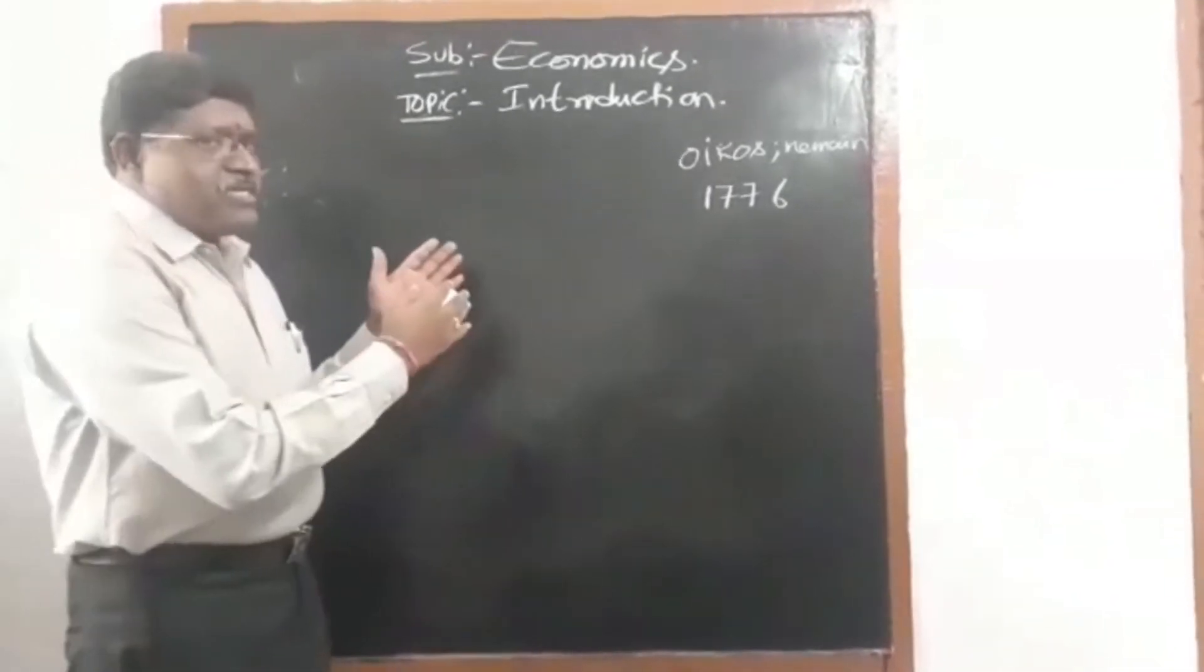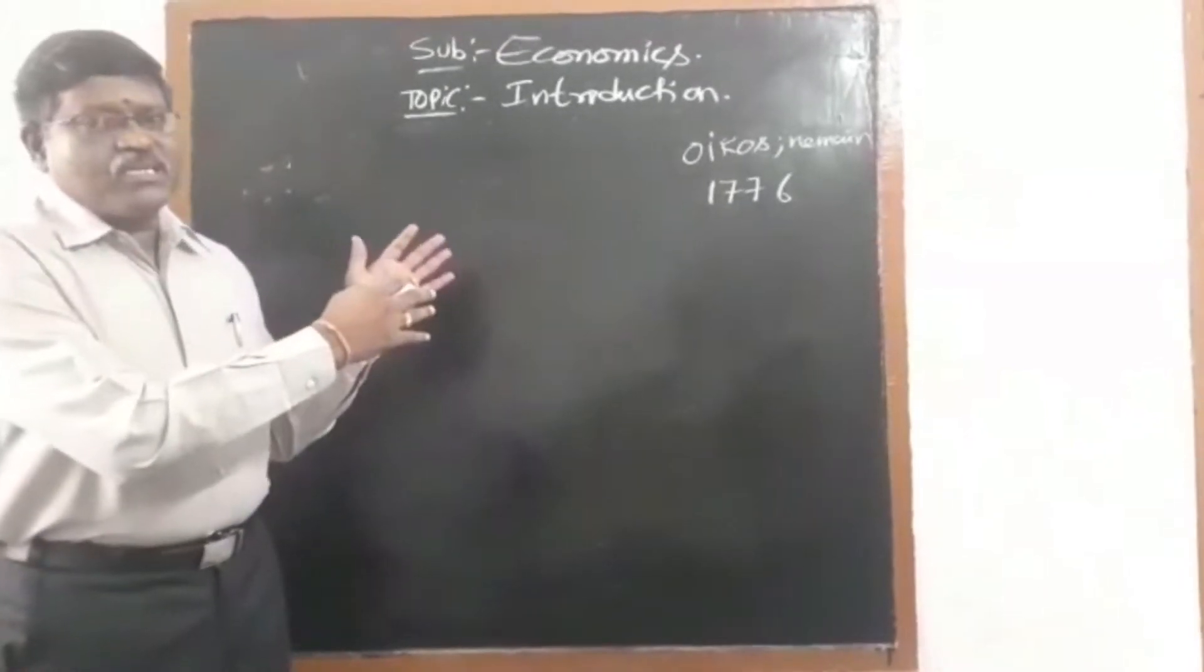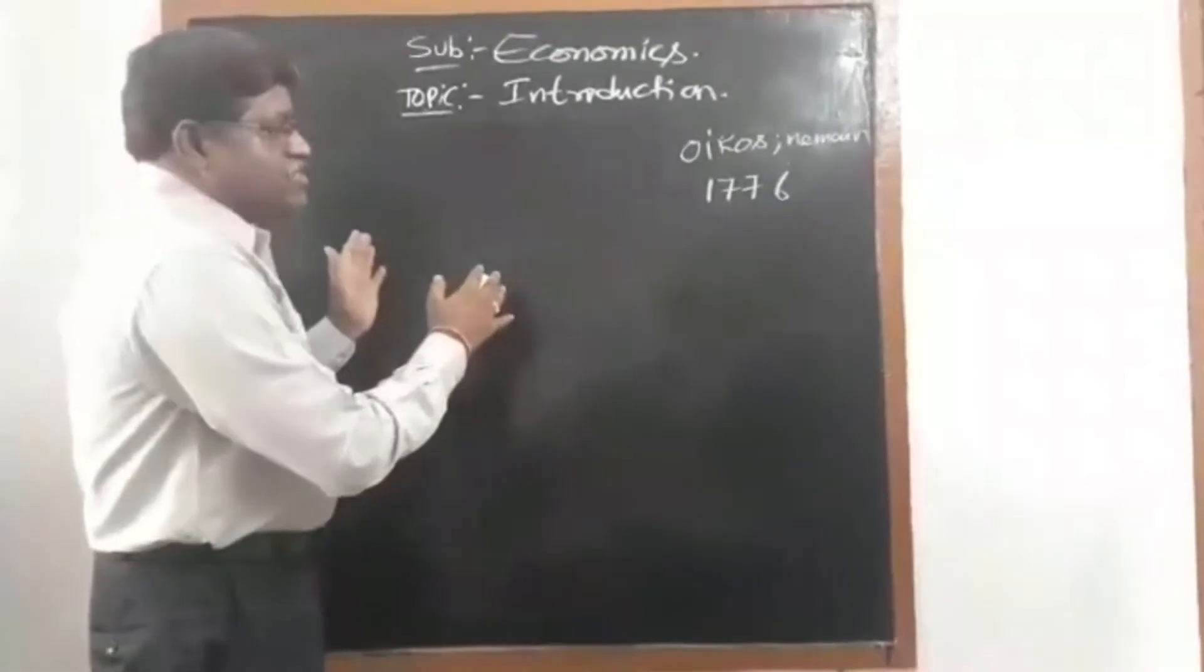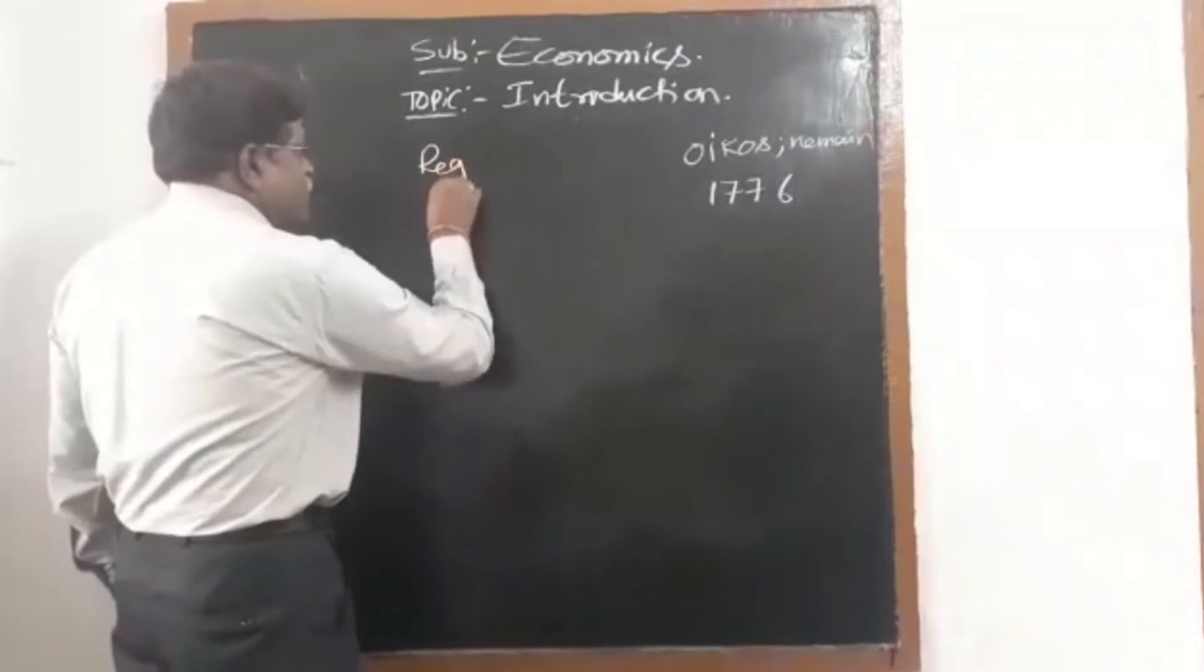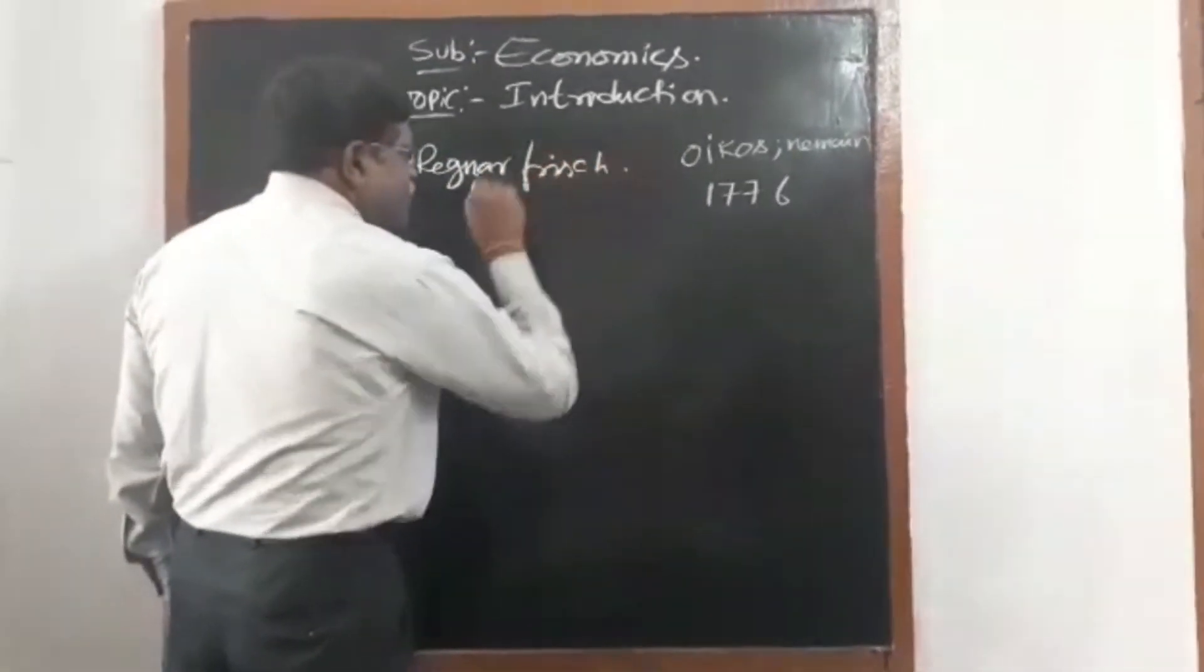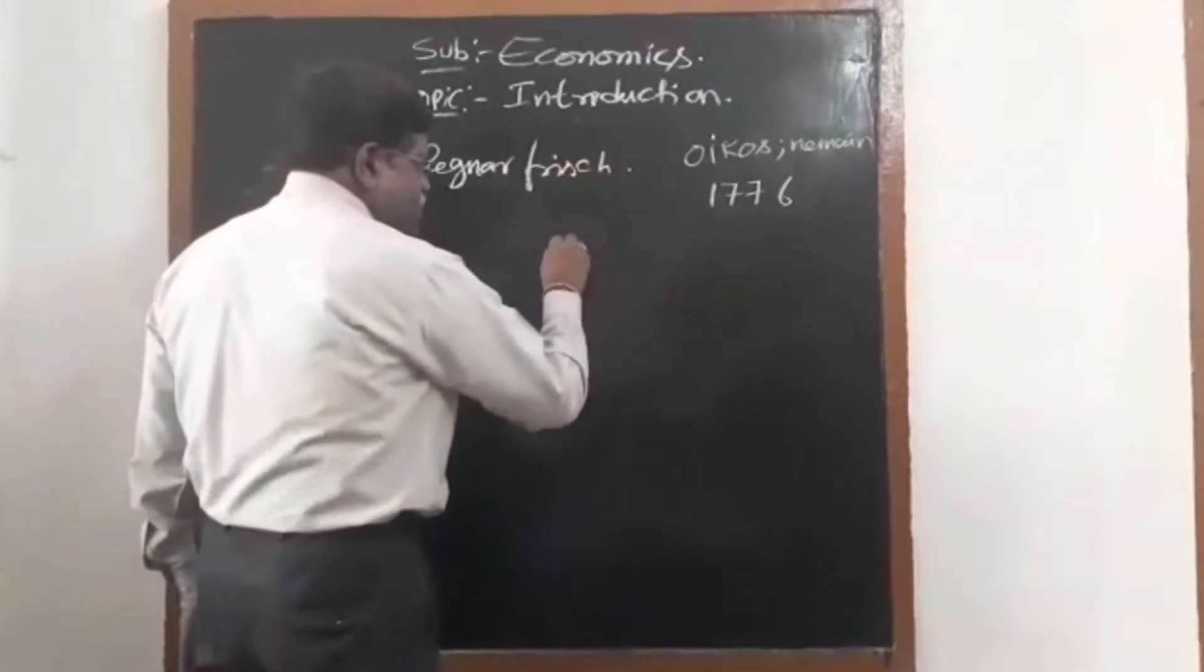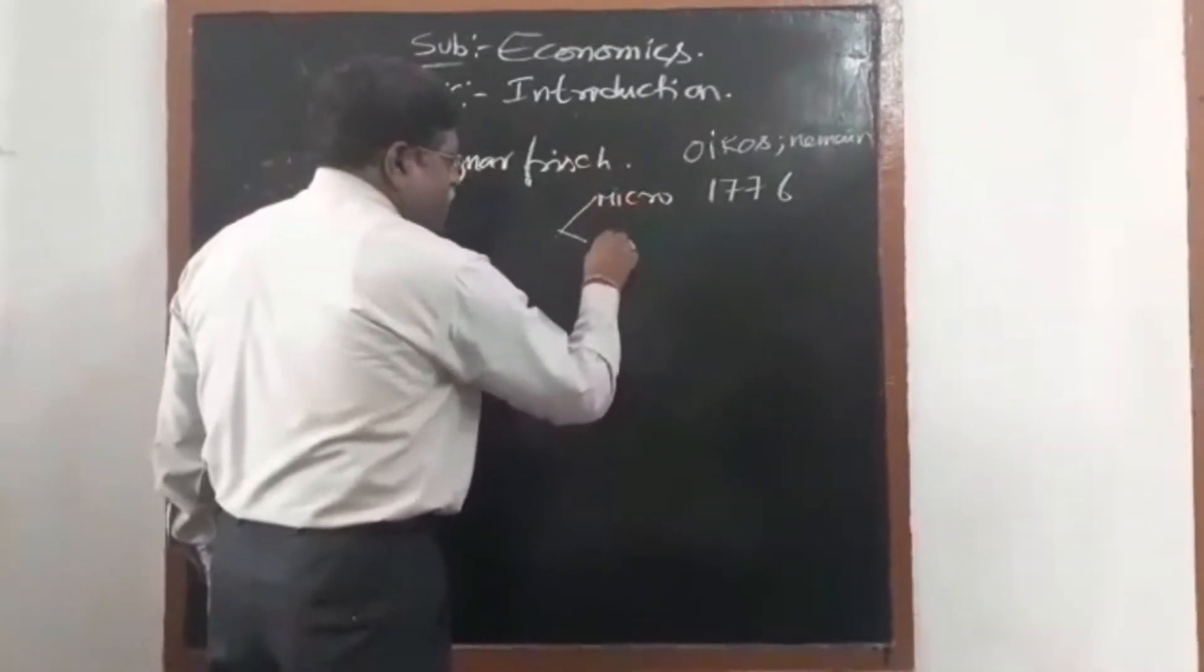Up to the 18th and 19th century it was studied as economics. After the 19th century, economics was divided into two different approaches by Ragnar Frisch. He divided economics into two different approaches: micro and macro, microeconomics and macroeconomics.